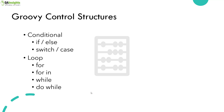Under conditional control structures, we are going to see about if, else, and switch case. It is also possible to have nested if statements or nested switch case statements. Under loop control structures, we are going to see about for, for-in, while, and do-while.